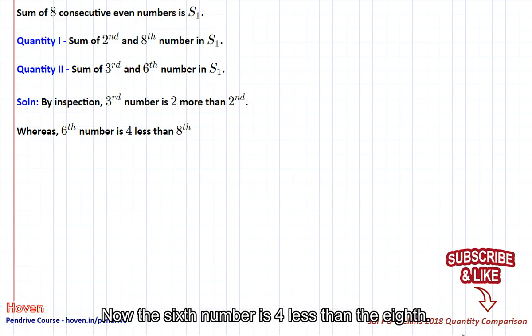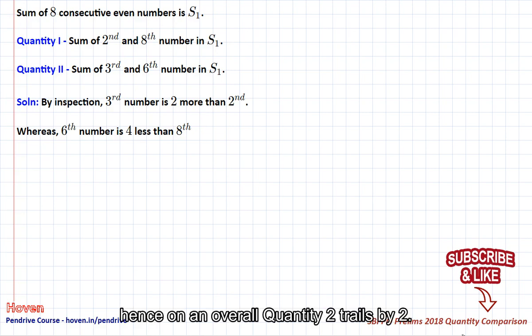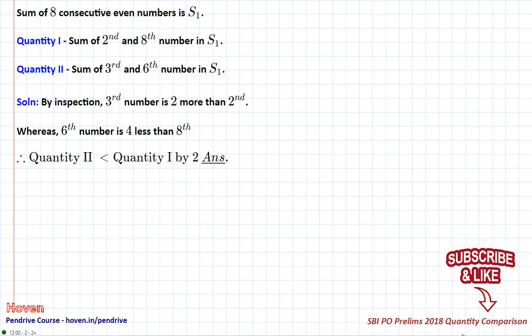Now the sixth number is 4 less than the eighth, so quantity 2 will be 4 places behind. Hence on an overall, quantity 2 trails by 2. Quantity 2 is less than quantity 1.